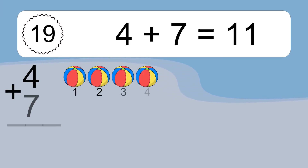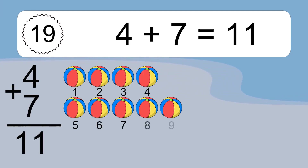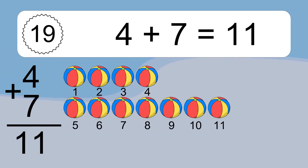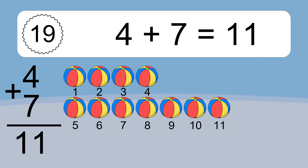4 plus 7 equals what? 4 plus 7 equals 11. Let's count it. 1, 2, 3, 4, 5, 6, 7, 8, 9, 10, 11.